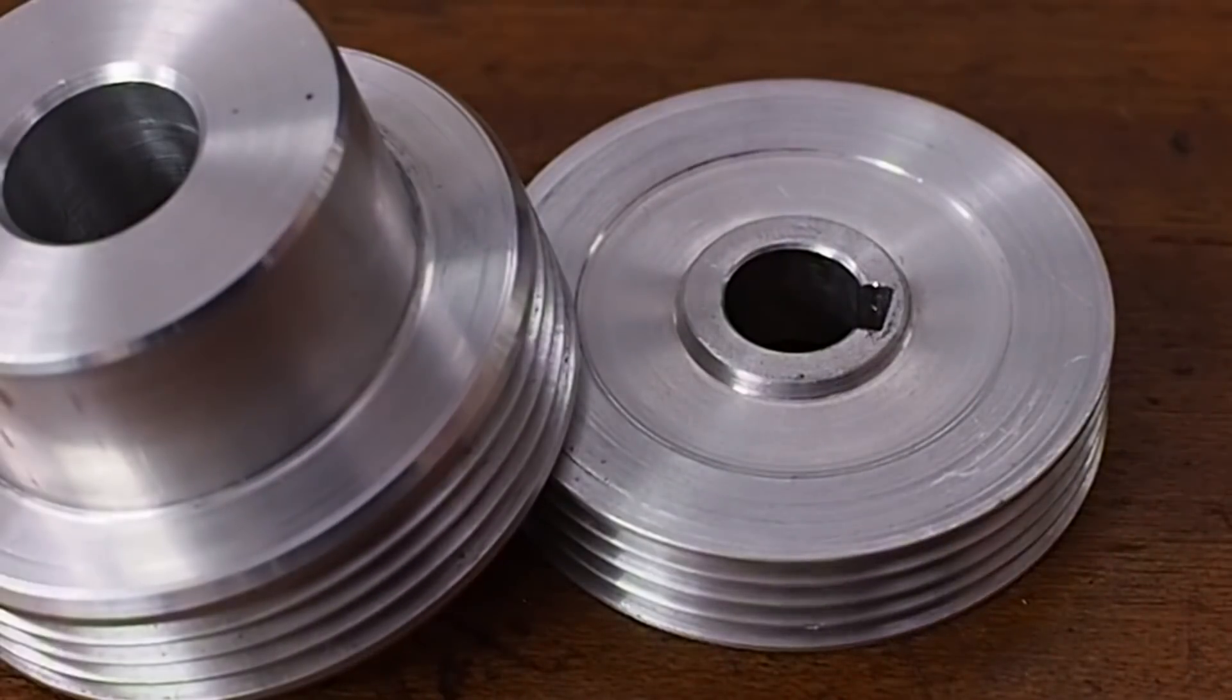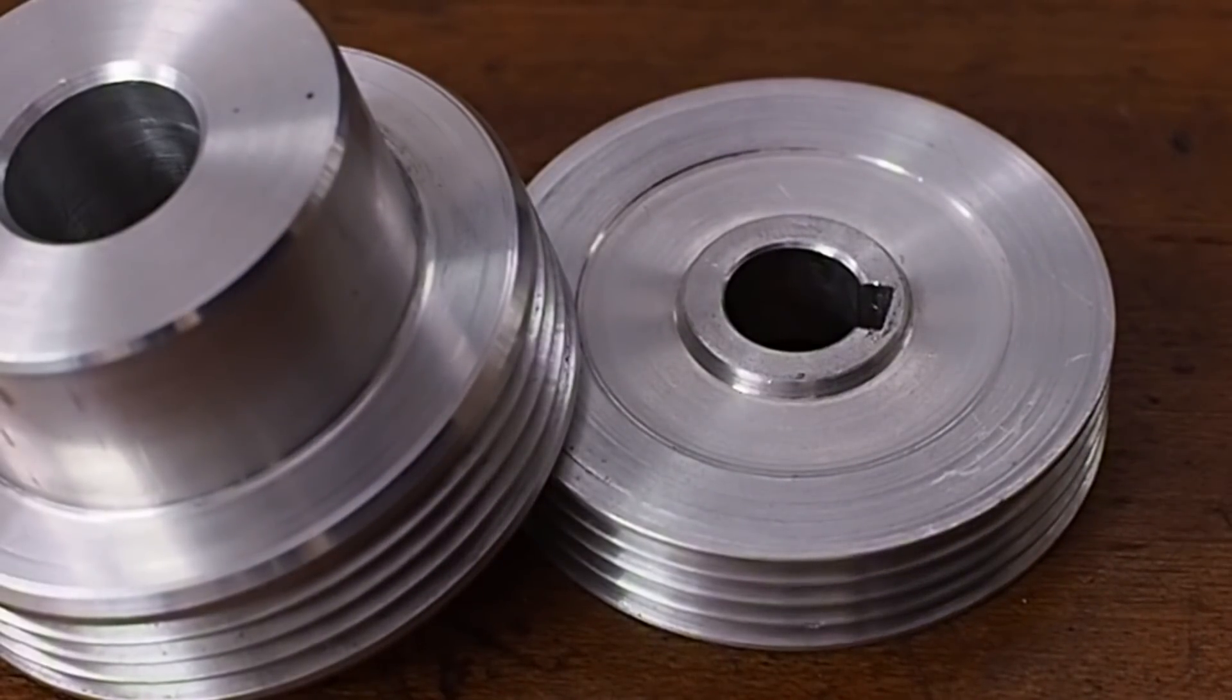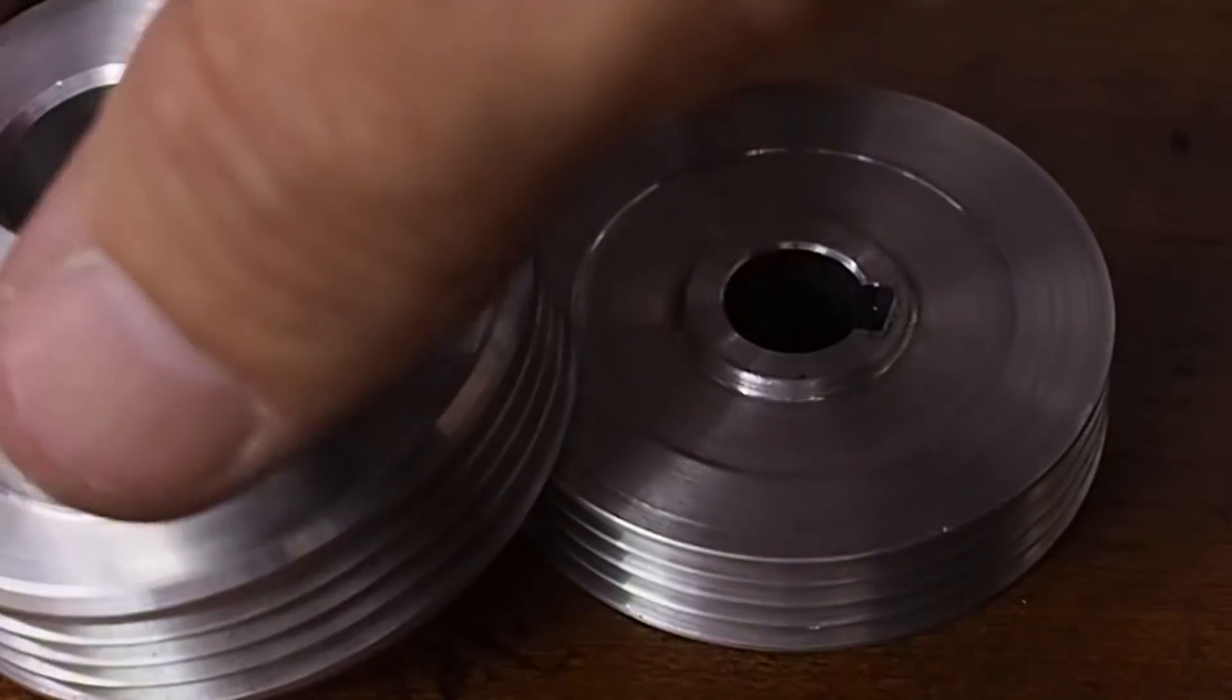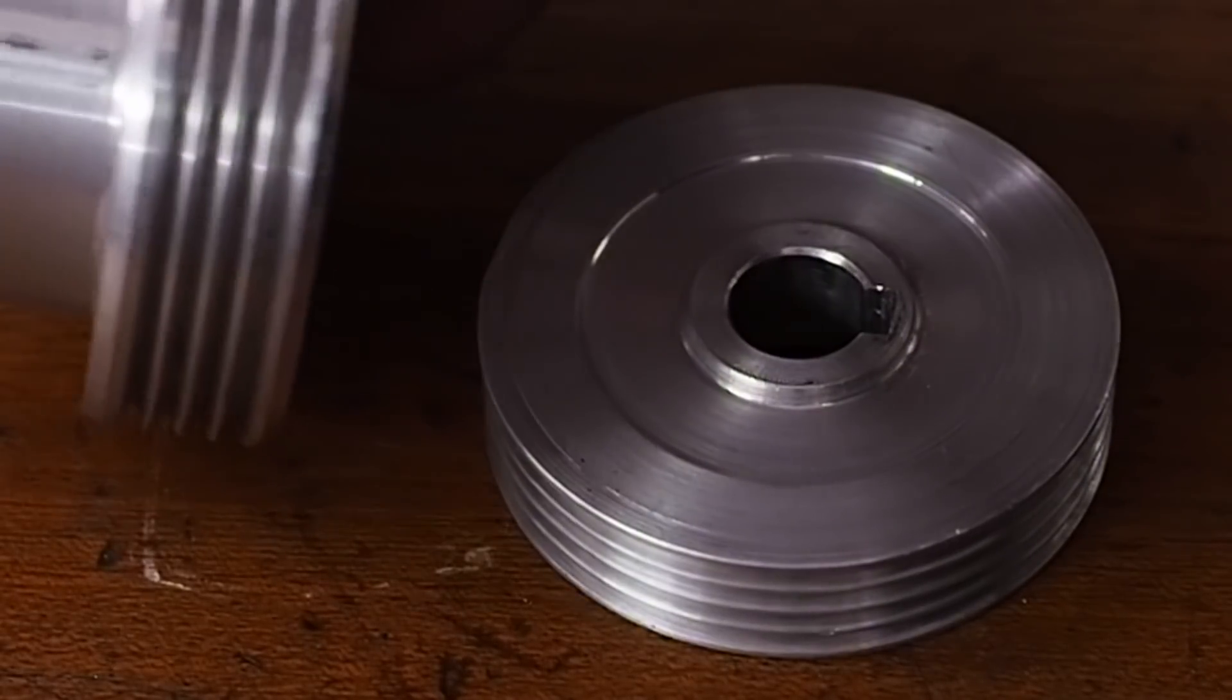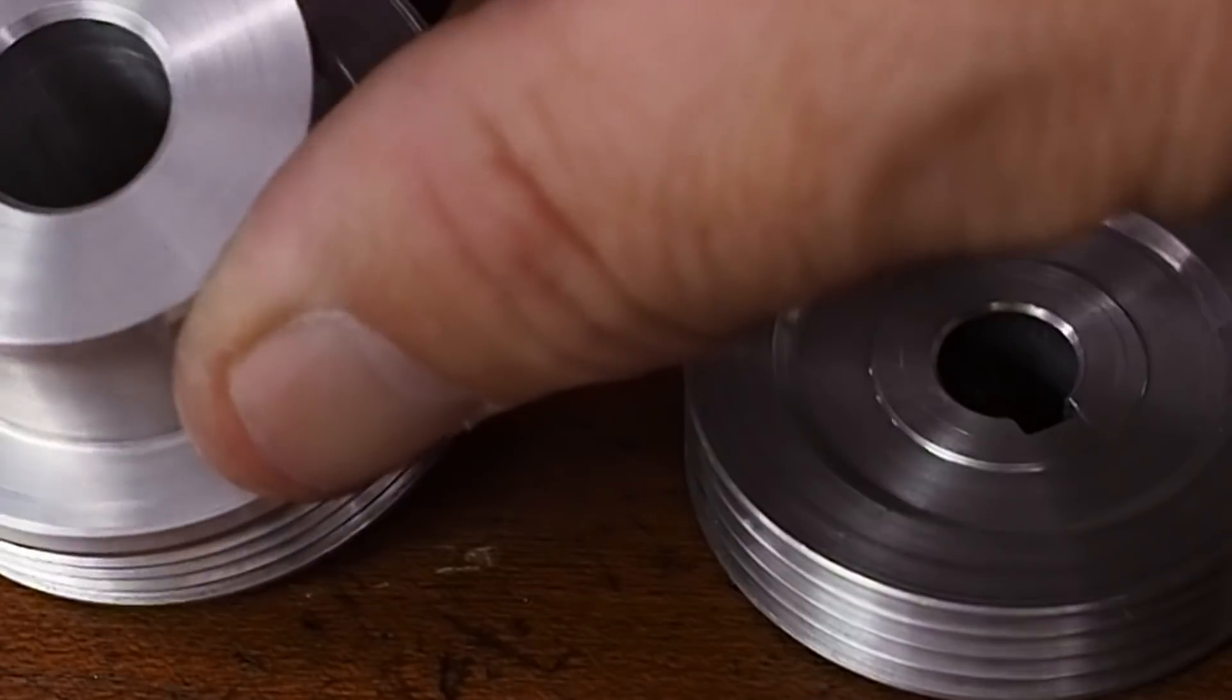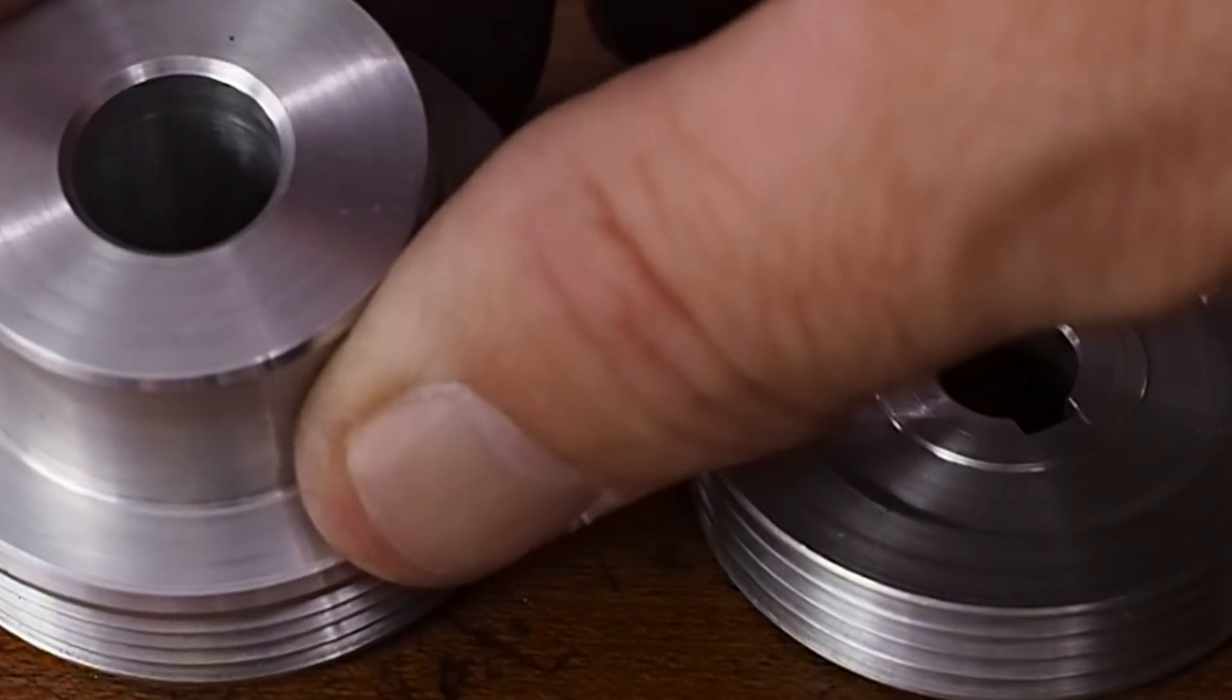Poly V belts have a 20 degree included angle so I just ground up a cutting tool on the Clarkson, found the dimensions off the internet and plunged the tool in to make the grooves. This one still needs to get its keyway cut so I think we'll do that next.